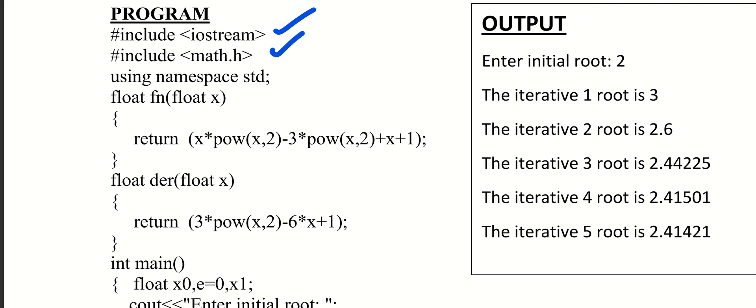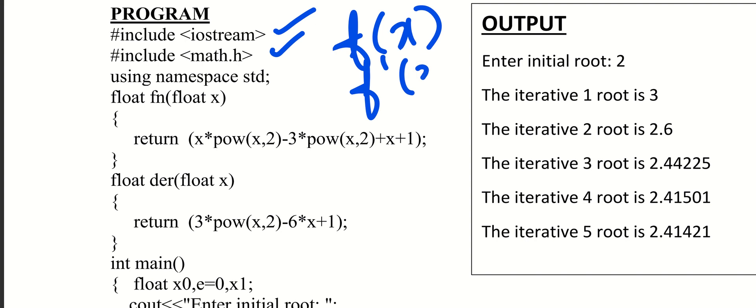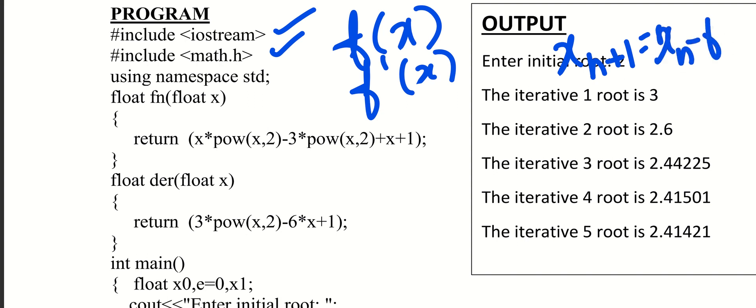We have two functions: f of x and f dash of x. Because the Newton-Raphson equation is x(n+1) equal to xn minus f of xn divided by f dash of xn. So we have two functions here — f of x and f dash of x.